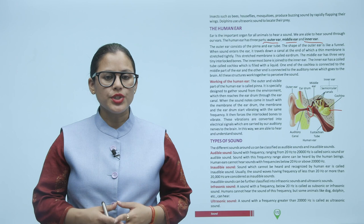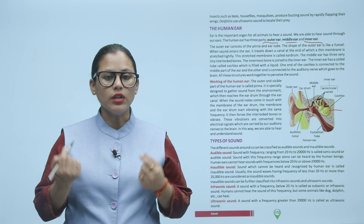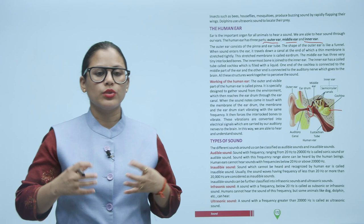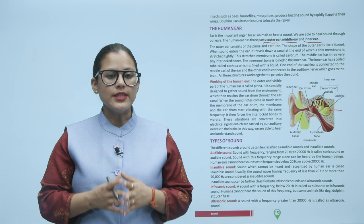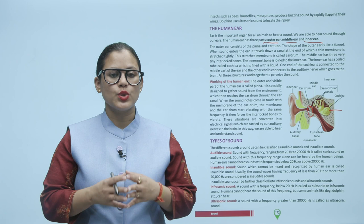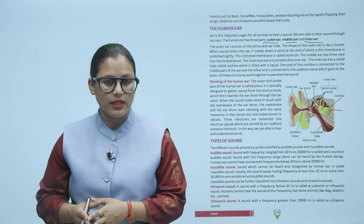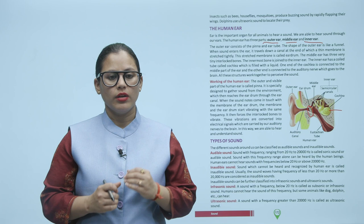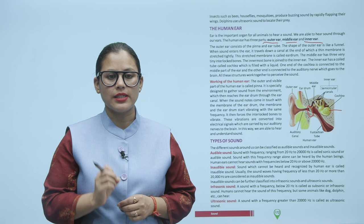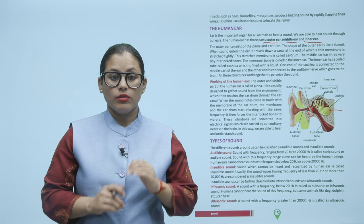Working of the human ear. The outer and visible part of the human ear is called the pinna, especially designed to gather sound from the environment, which then reaches the eardrum through the ear canal. When the sound waves come in contact with the membrane of the eardrum, the membrane starts vibrating with the same frequency, then forcing the interlocked bones to vibrate. These vibrations are converted into electrical signals which are carried by the auditory nerves to the brain. In this way, we are able to hear and understand sound.